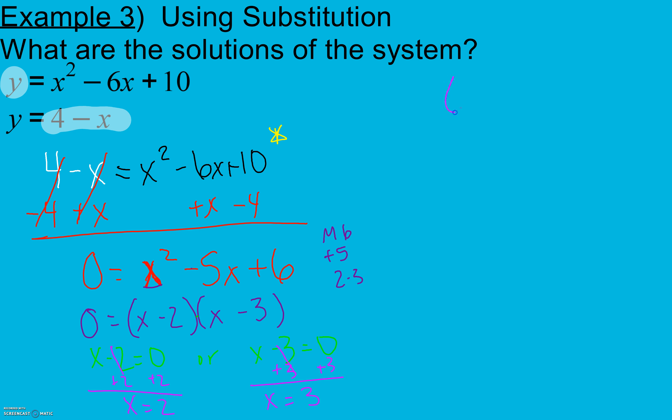Now these are my x values. So in my ordered pairs, which I'm going to have two of here, they're my x's. I'm not done though, because in my original equation I have x's and y's. So in my final answer, I need x's and y's.